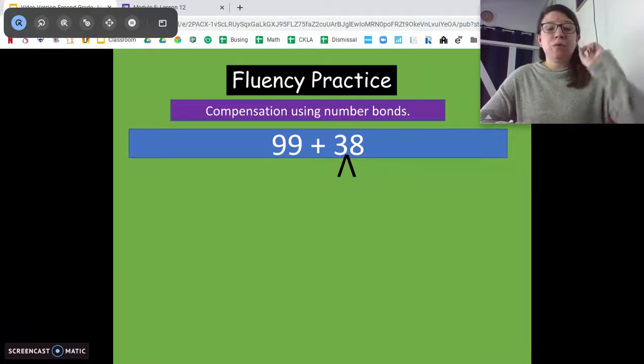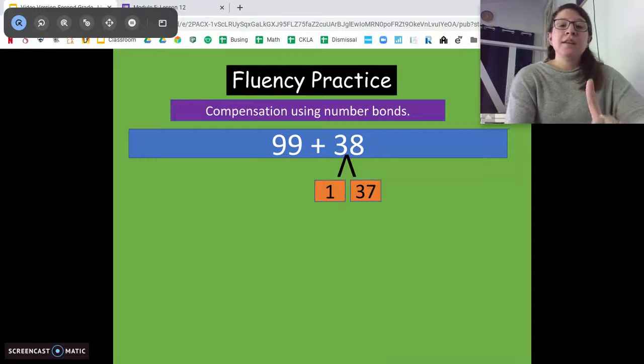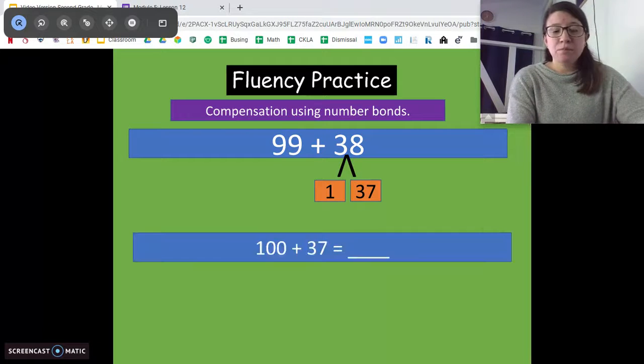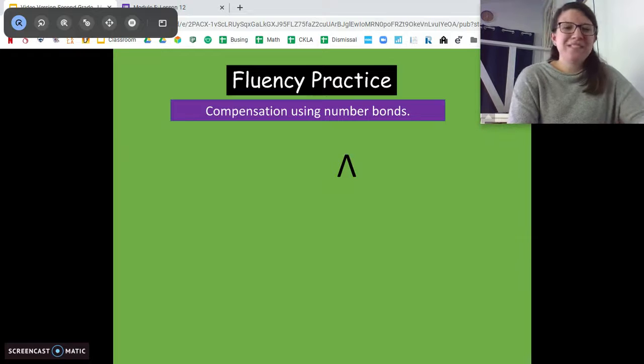Good. So 99 needed one. So we're gonna take that one out and we get 1 and 37. Now when we do that, 99 plus 1 is 100, plus 37, 137. Good job! Let's do another one.